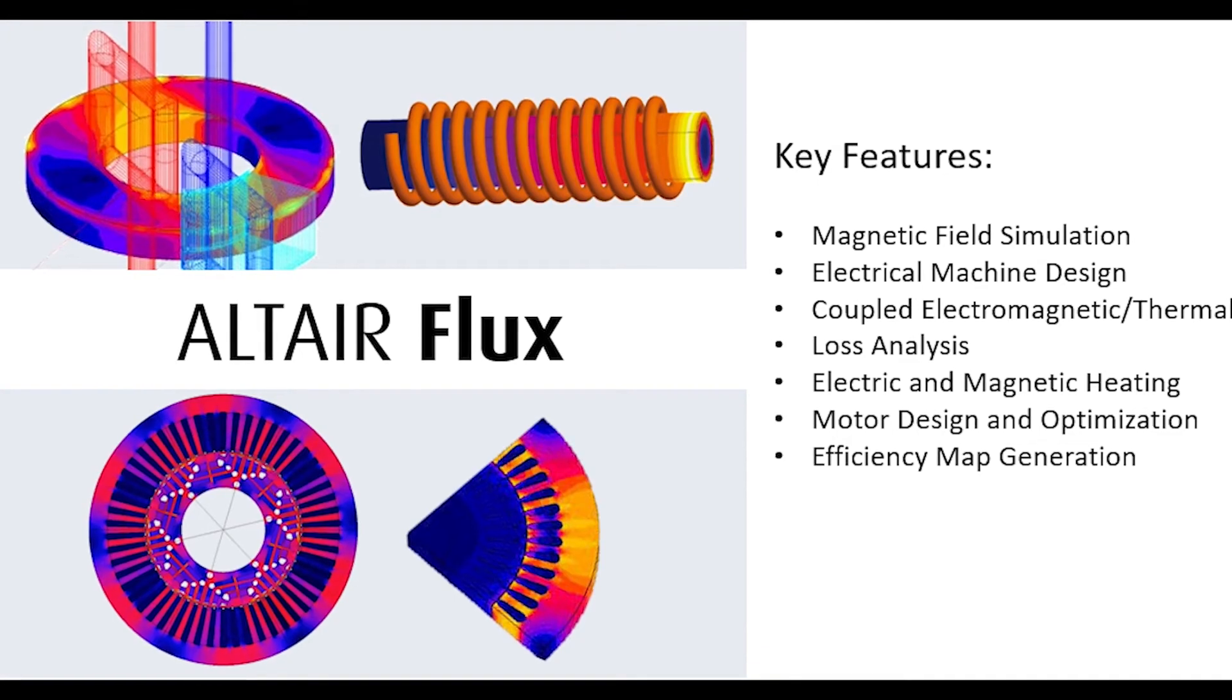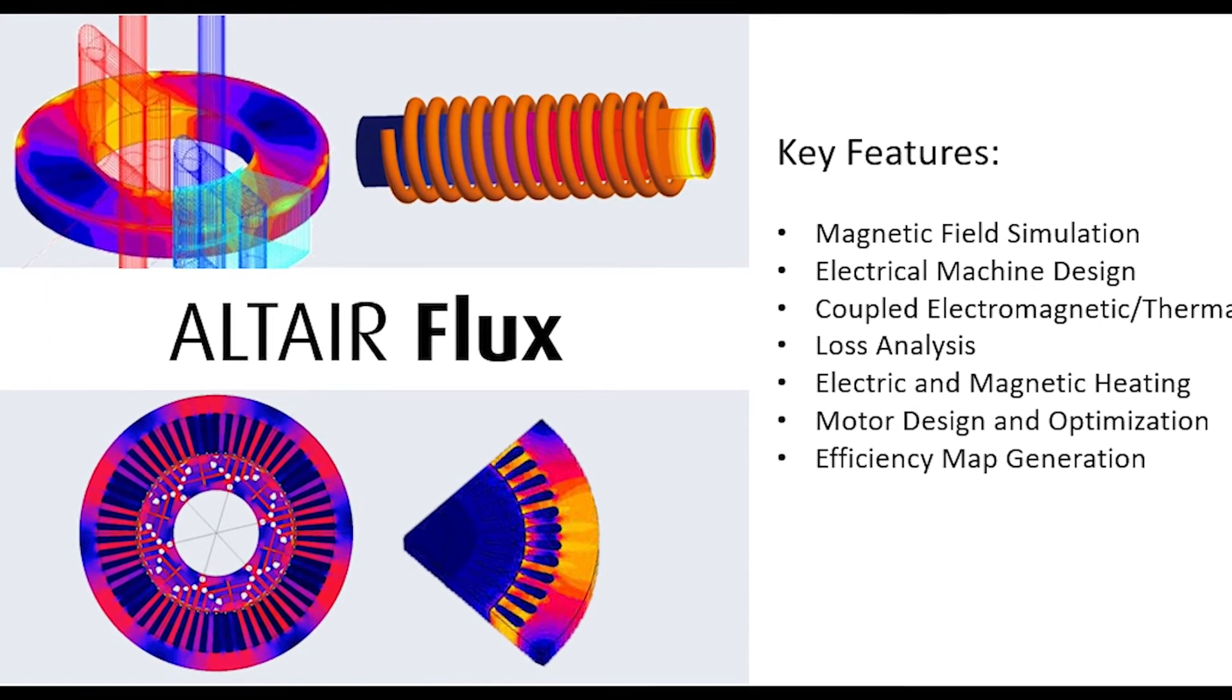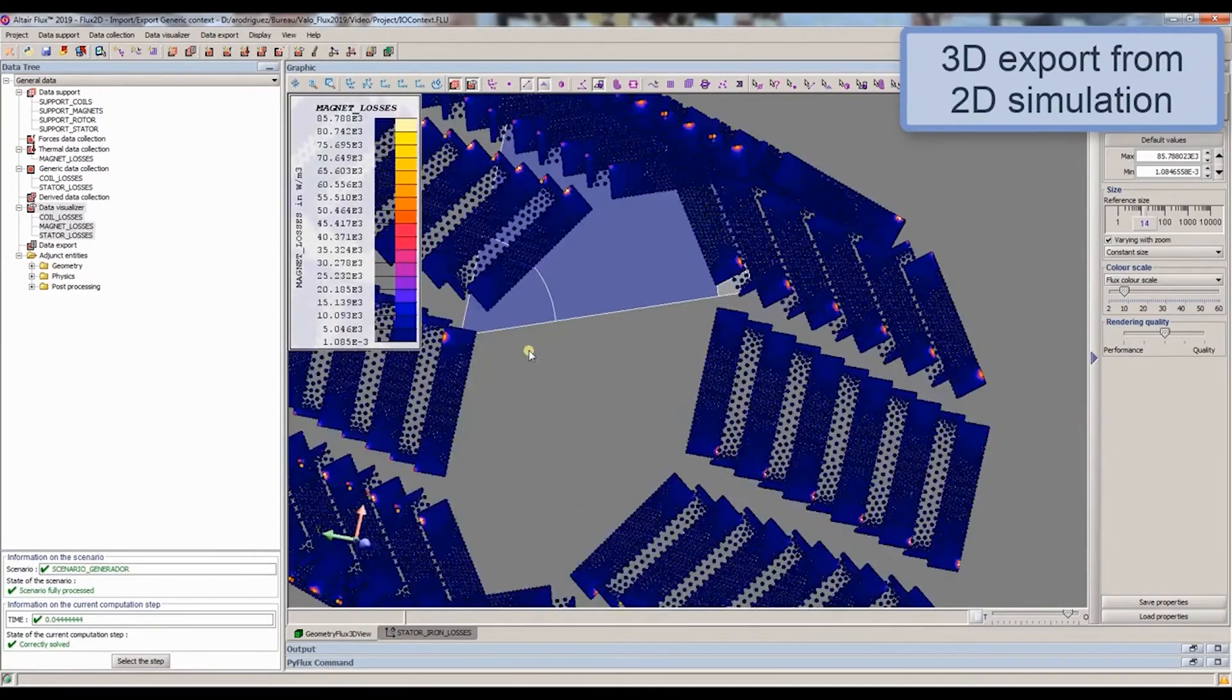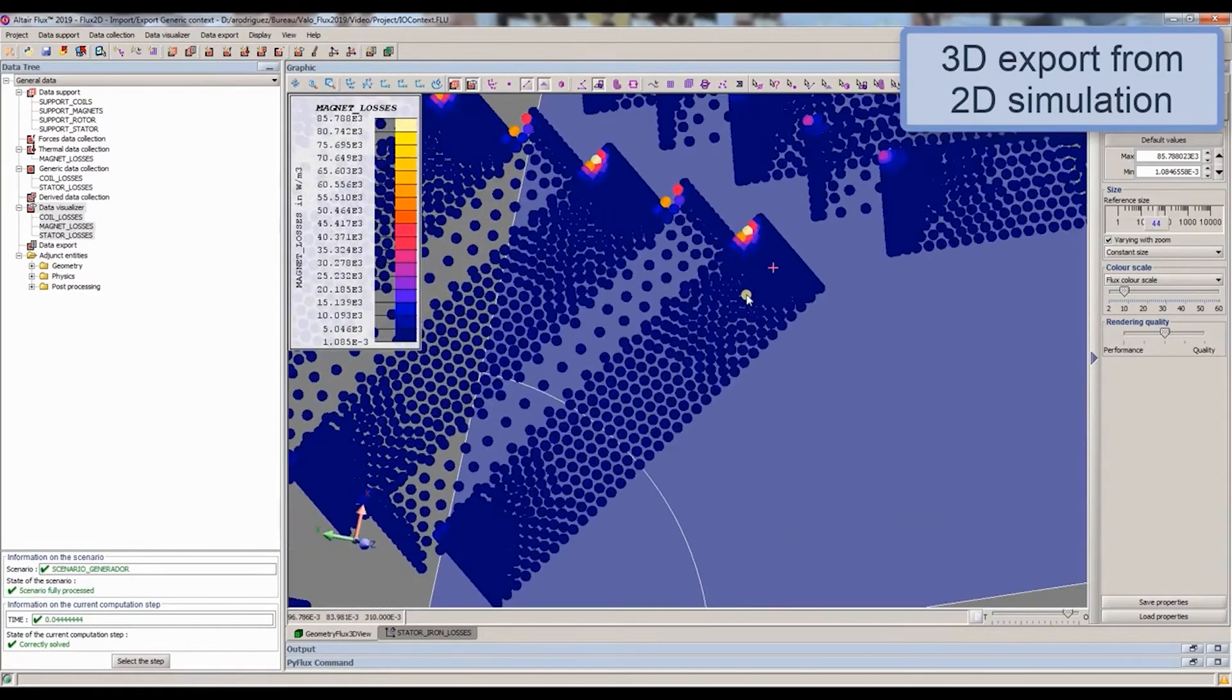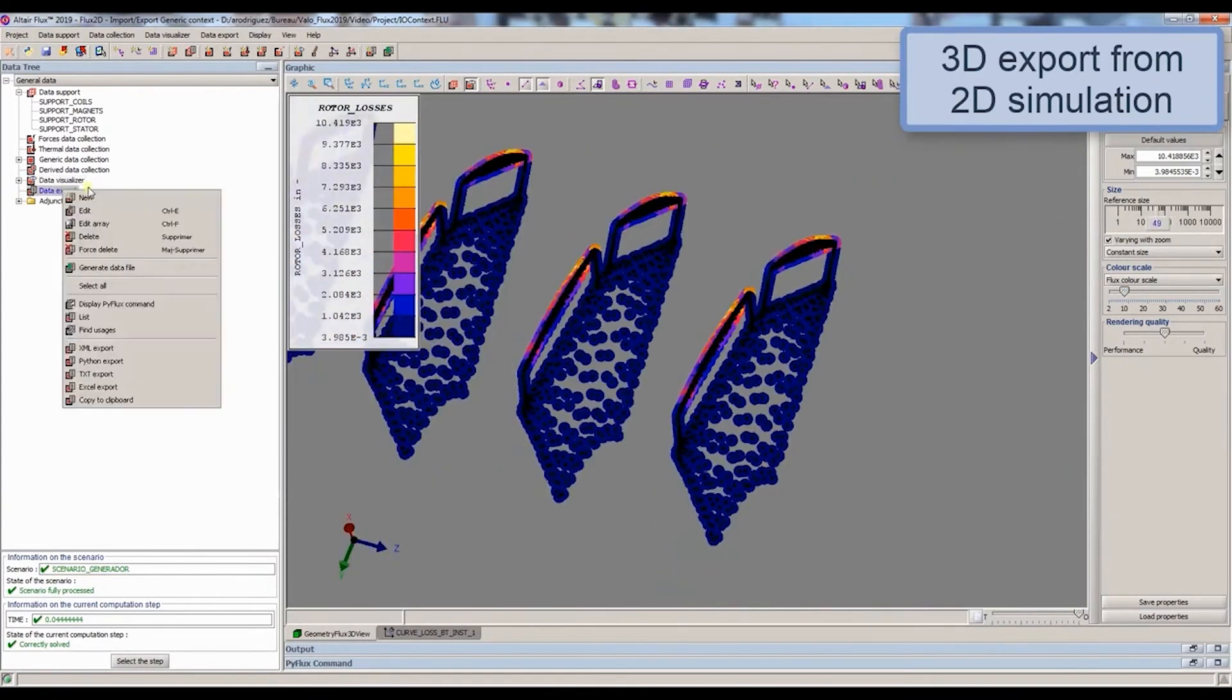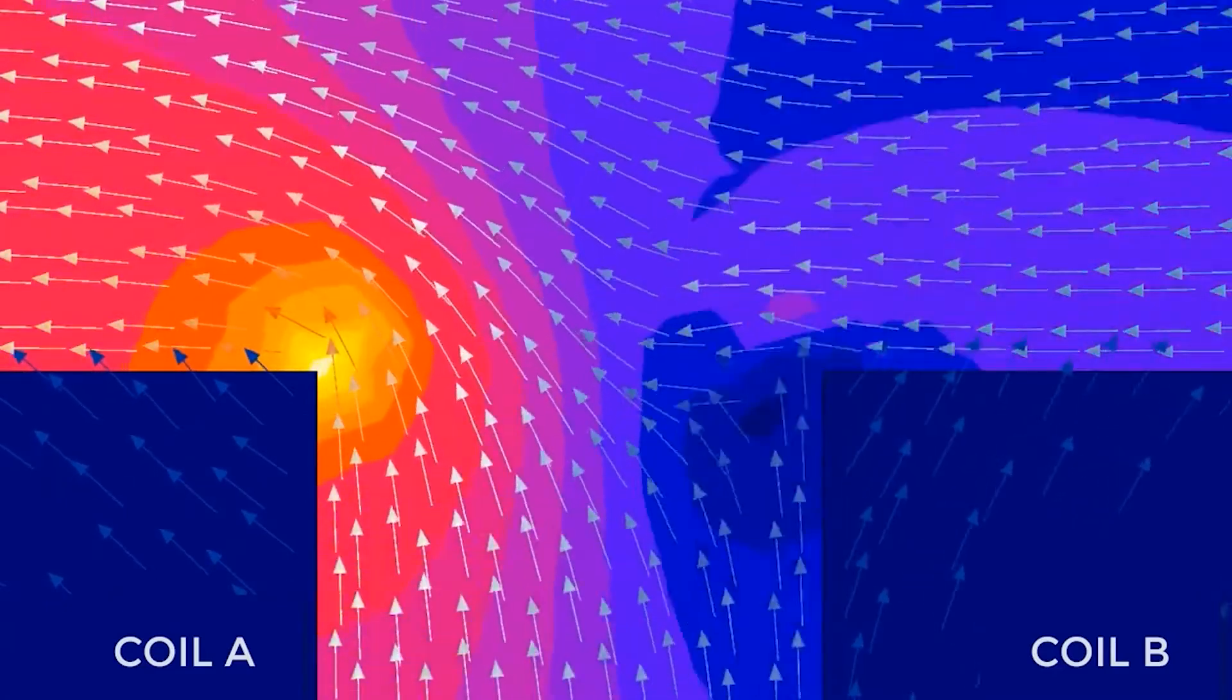Altair Flux and Flux Motor allow users to accurately analyze and optimize electromagnetic devices such as motors, generators, transformers, and actuators. Its advanced simulation capabilities provide insights into electromagnetic fields, losses, thermal effects, and more. The Flux Motor module specializes in motor design scenarios for performance prediction, initial sizing, and reducing energy consumption.